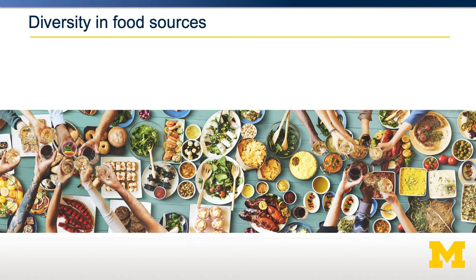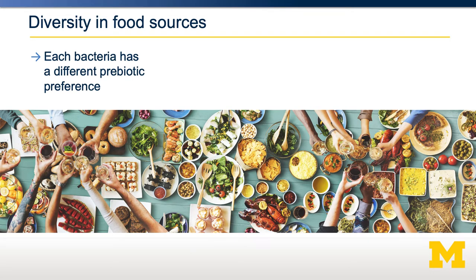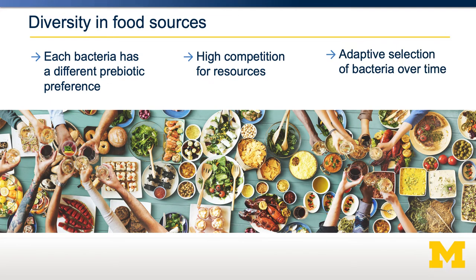To ensure a diverse set of microbiota, we want diversity in food sources, because each bacteria has a different food preference. If you have more of a particular food, that will preferentially lead to having more of that bacteria. Conversely, if a bacteria's preferred food source decreases in your diet, that bacteria will be difficult to maintain. There is incredibly high competition for resources between bacteria in the gut microbiome, and those bacteria are able to adapt in an evolutionary process based on the foods you eat.